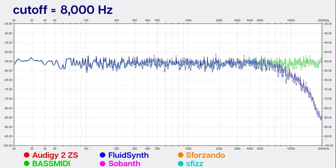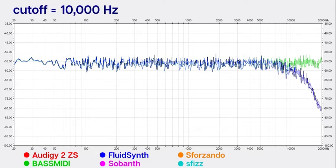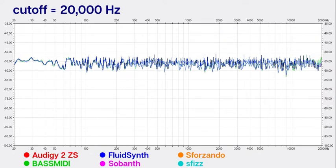So setting the filter between 8000 Hertz and 20,000 Hertz makes no difference for the Sound Blaster cards and also for BASSMIDI, which emulates this behavior.